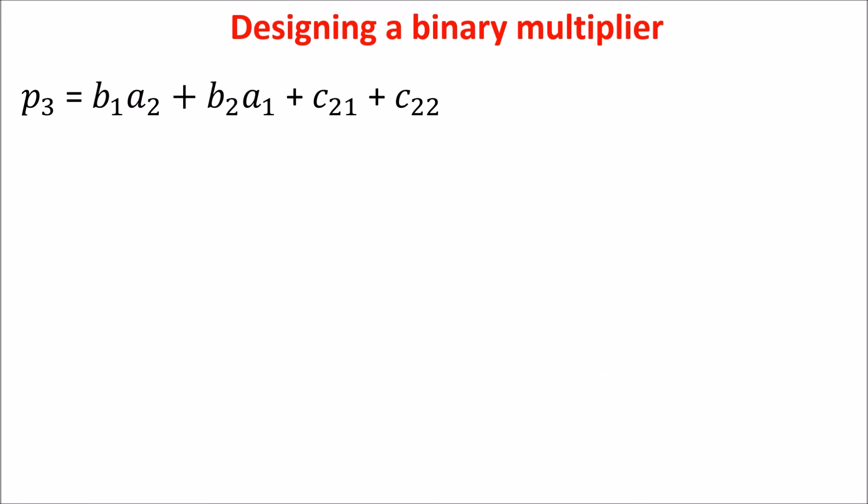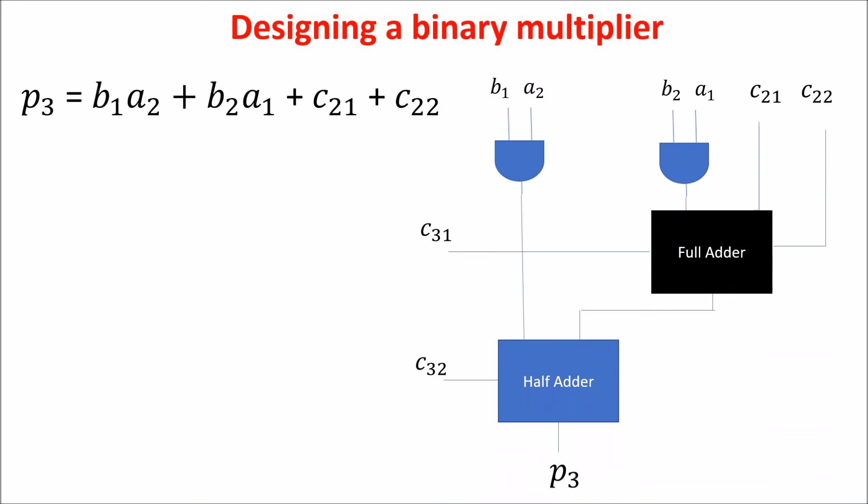P3 is composed by adding the two carriers produced in the previous stage to the factors in the third stage. First, we perform the multiplication, and then we see that we have four terms like the previous stage, so we need just a full-adder and an half-adder as we did before.